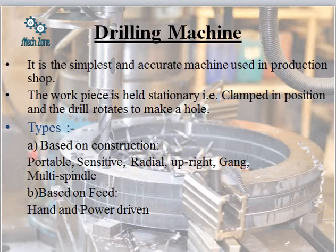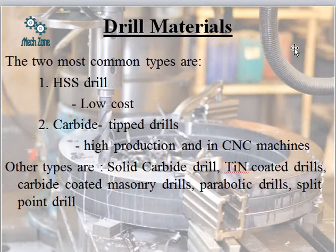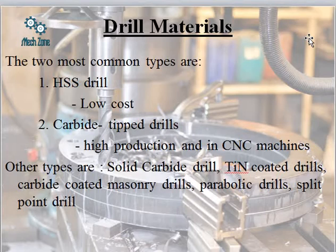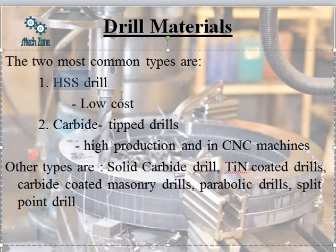The types of drilling machines can be classified first based on construction: portable, sensitive, radial, upright, gang, and multi-spindle; and second based on the drive: hand or power driven. Regarding drill materials, the most common is high-speed steel due to its low cost. However, carbide materials can also be used for higher production in CNC machines. Other carbide-type drills include solid carbide drills, TiN-coated drills, carbide-coated masonry drills, parabolic drills, and split-point drills.